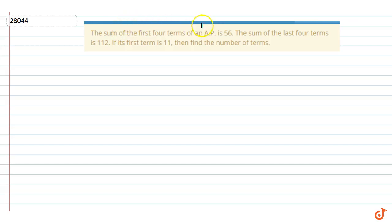The question given is: the sum of the first four terms of an AP is 56, the sum of the last four terms is 112. If its first term is 11, then find the number of terms in the series.